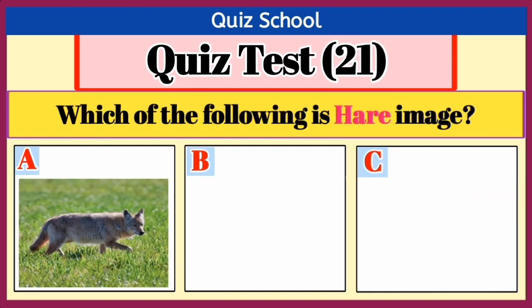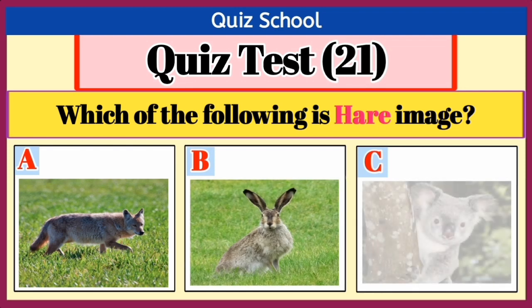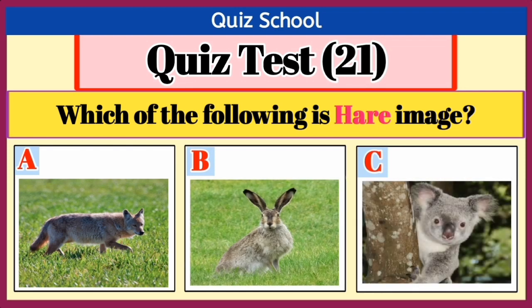Question number 5. Which of the following is the hare image? Option A, Option B, or Option C. Right answer is Option B.